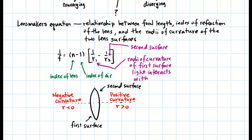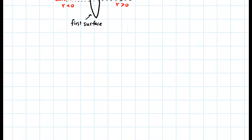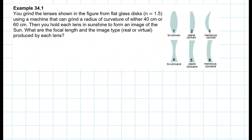Now we move to Example 34.1. You grind the lenses shown in the figure from flat glass discs using a machine that can grind a radius of curvature of either 40 or 60 centimeters. You then hold each lens in sunshine to form an image of the sun. What are the focal length and image type produced by each lens? From our earlier discussion, we expect lenses 1, 2, and 3 to be converging, lenses 4 and 5 to be diverging, and lens 6 we are unsure about. Let's start with lens 1.